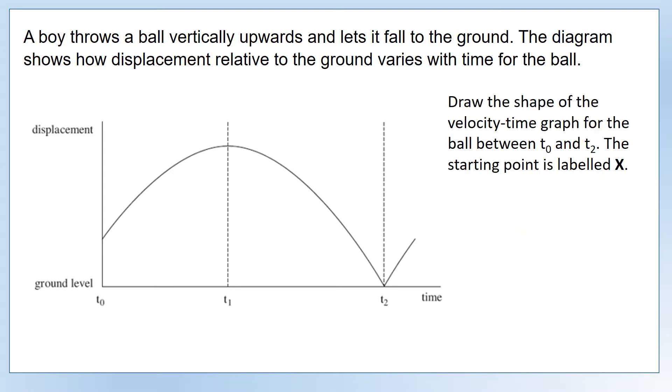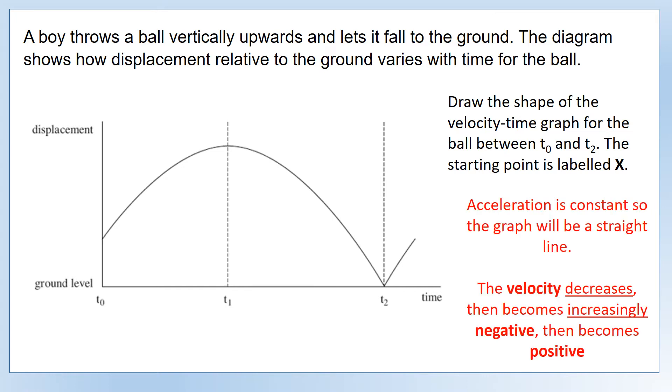Draw the shape of the velocity-time graph for the ball between t0 and t2, with the starting point labeled x. Let's first use this graph to describe it. We know the acceleration is going to be constant because it's acted on by gravity or the weight force. So we expect the velocity versus time graph to be a straight line.